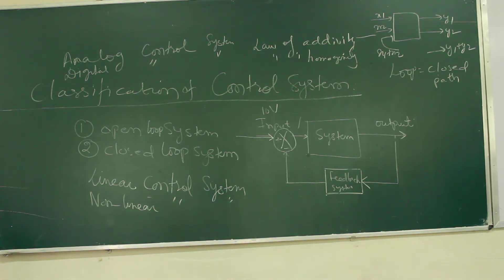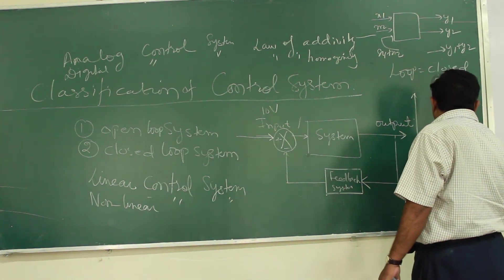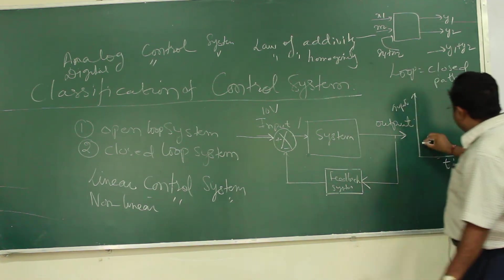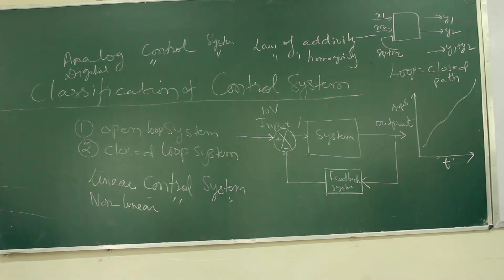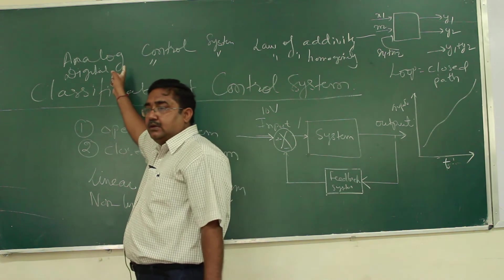Analog means you are getting continuous time data. Graphically to understand this, suppose this is your time and this is your corresponding input. So for all time there exist some values. Such type of system is called analog system. A continuous time signal is there in the system, then we call the system an analog system.